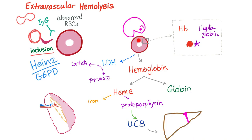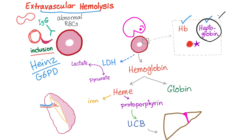Here is our abnormal red blood cell — it gets attacked by the macrophage. The hemoglobin inside the red blood cell is always bound to a protein called haptoglobin. So when the RBC gets attacked, both the hemoglobin and the haptoglobin are attacked together. Therefore, in extravascular hemolysis, there is a decreased serum level of haptoglobin, because it gets attacked by the same macrophage.